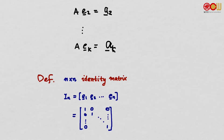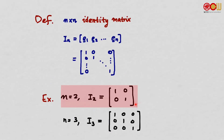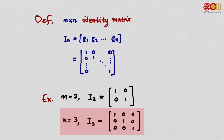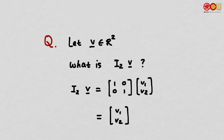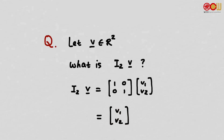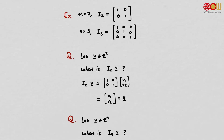The last definition is the identity matrix. If we put the standard vectors e1 to en as columns into one matrix, we get the n×n identity matrix In, which has 1s on the diagonal and 0s everywhere else. For example, I2 is the 2×2 identity, and I3 has 1s on the diagonal and 0s elsewhere. If v is a vector in R2, then I2·v = v — we get back v itself. More generally, for any vector v in Rn, the matrix vector product In·v = v.